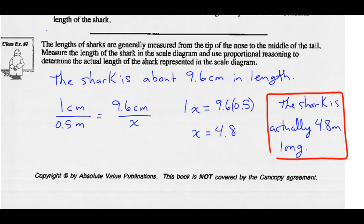If you measure the shark from the tip of the nose to the middle of the tail, you should get about 9.6 centimeters in length. Using proportional reasoning: 1 centimeter over half a meter equals 9.6 centimeters over x. Cross-multiplying, 1 times x equals 9.6 times a half, so x equals 4.8. The shark is actually 4.8 meters long.